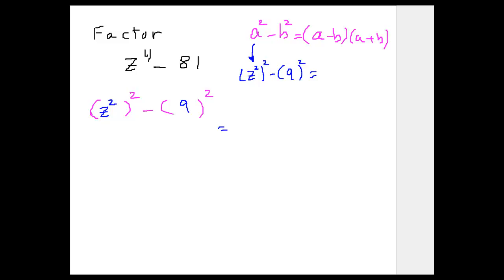Everywhere you see a, you're going to substitute that with z². Everywhere you see b, you're going to substitute that with 9. So one would be minus, one would be plus.